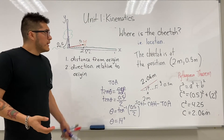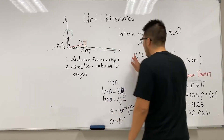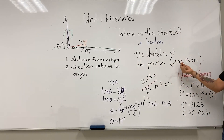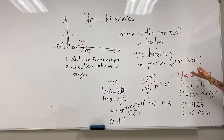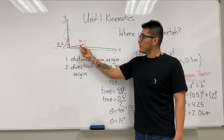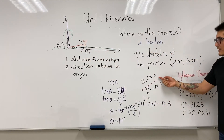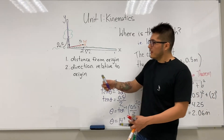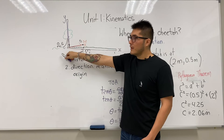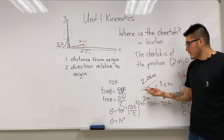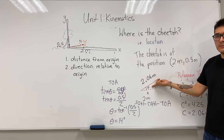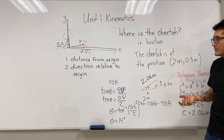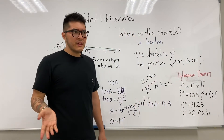Let's recap: where's the cheetah? Using coordinates in the x and y space it's easy — two meters to the right from the tree and 0.5 meters above. Another way is to describe exactly how far away it is from the origin using the hypotenuse via Pythagoras: 2.06 meters. But we can do better because that still doesn't tell you in what direction relative to the origin it is, so we use the tangent ratio to find the unknown angle — 14 degrees.